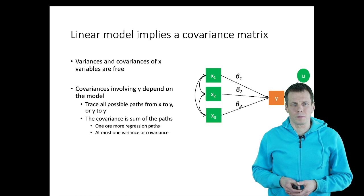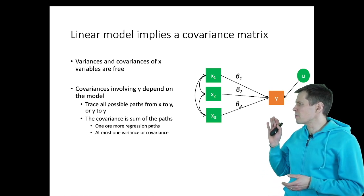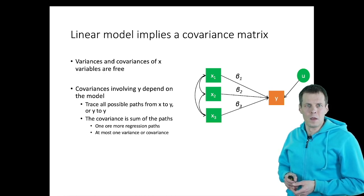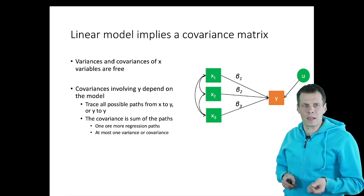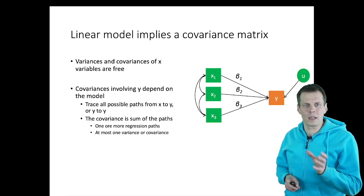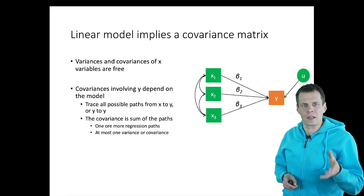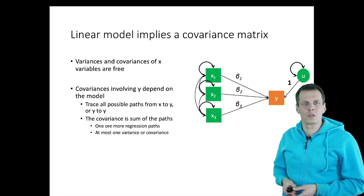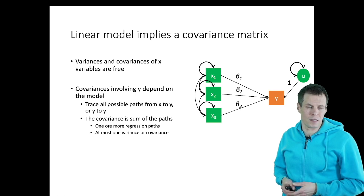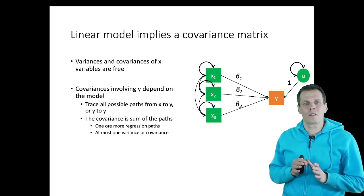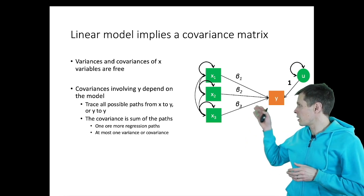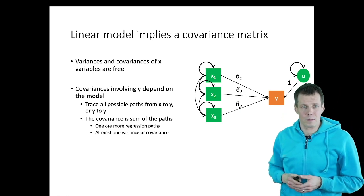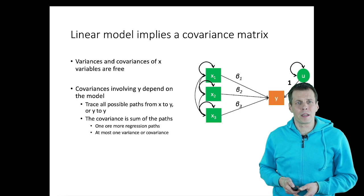Let's start with this simple model. One of the problems with this simple recursive model is that there are not many two-headed arrows that we can trace with. What we need to do first is to make the variances explicit. A two-headed arrow can quantify either a correlation or covariance, but we can also use two-headed arrows to quantify variances in this kind of path diagram. A variance is simply a variable's covariance with itself. So we can add variances of x1, x2, x3, and the error term to make the variances more explicit. Then we can start tracing.